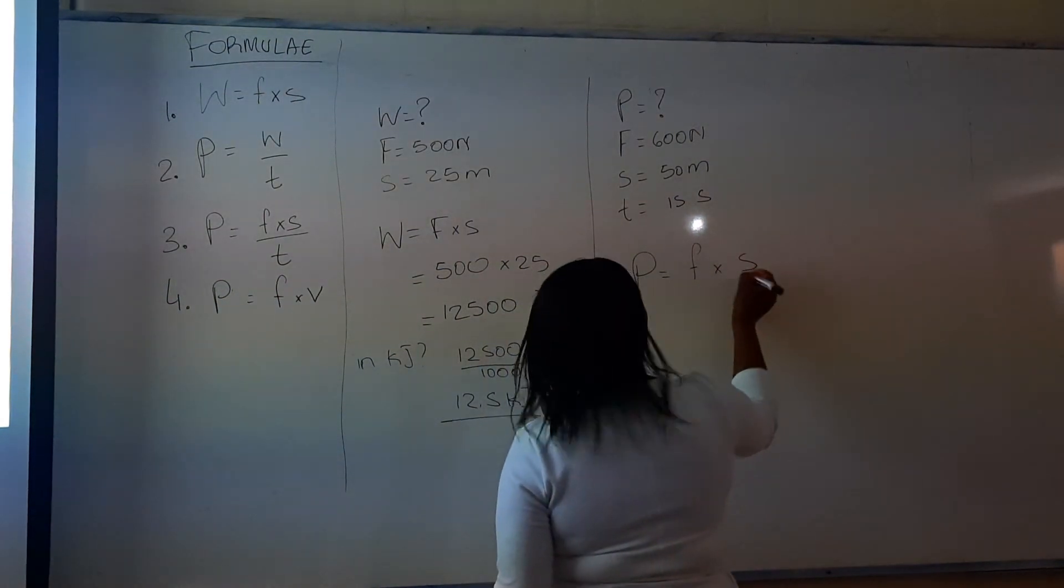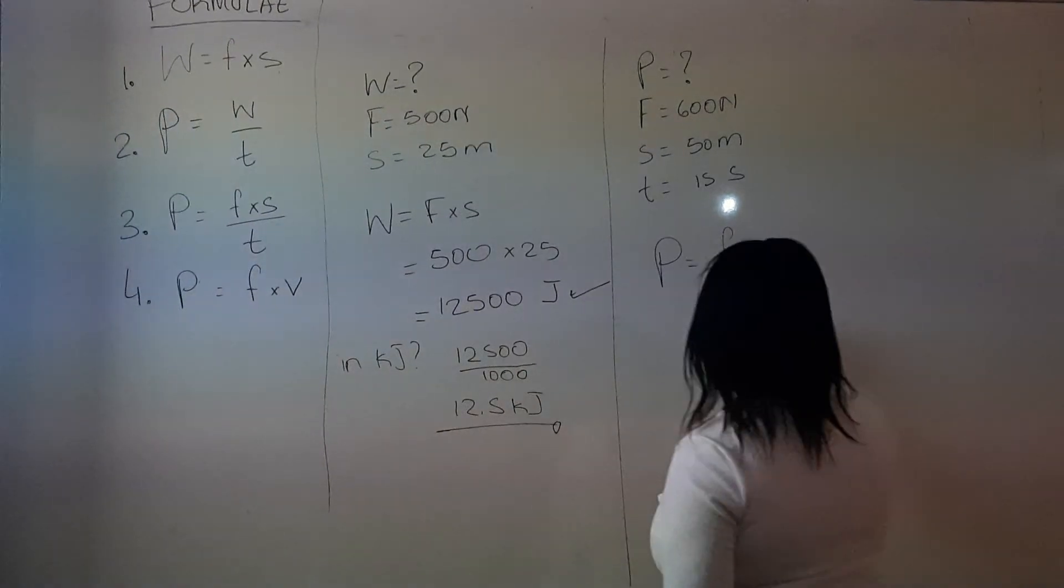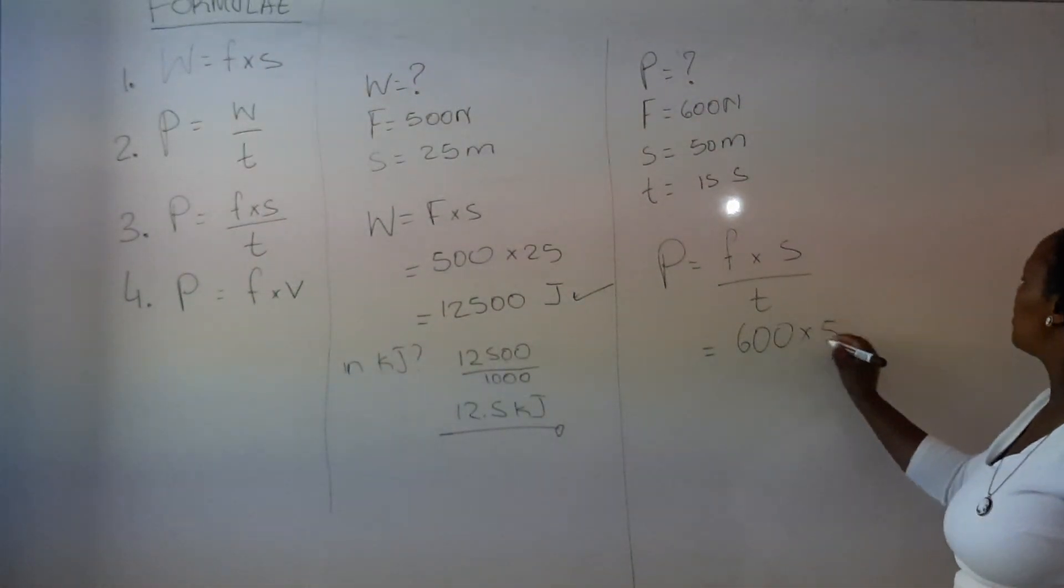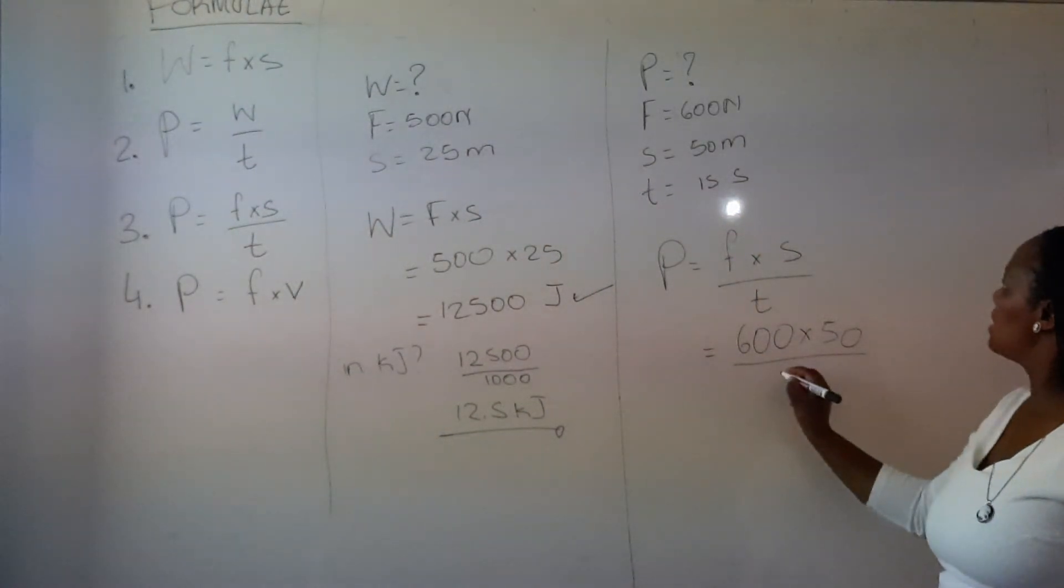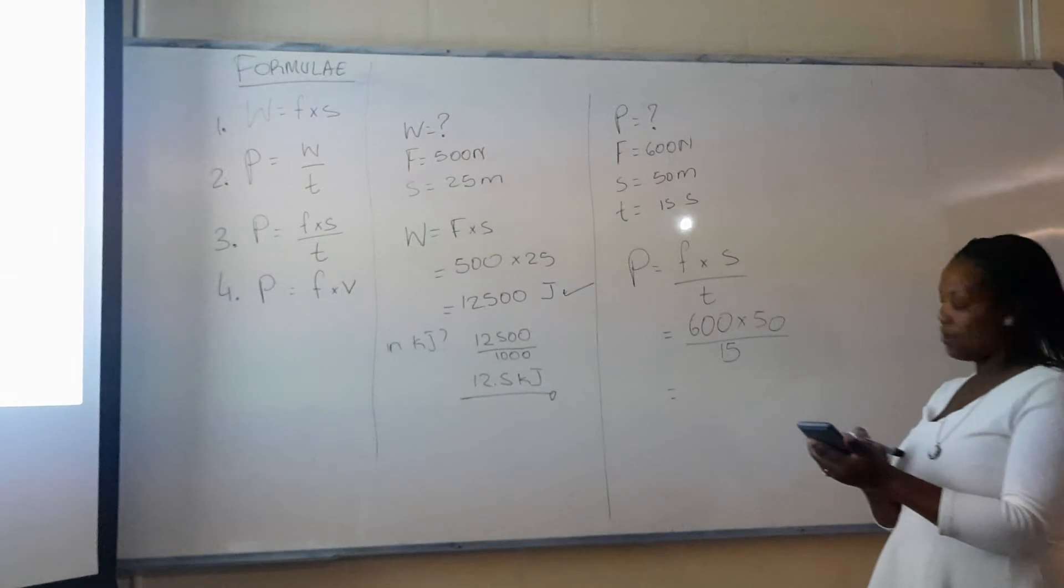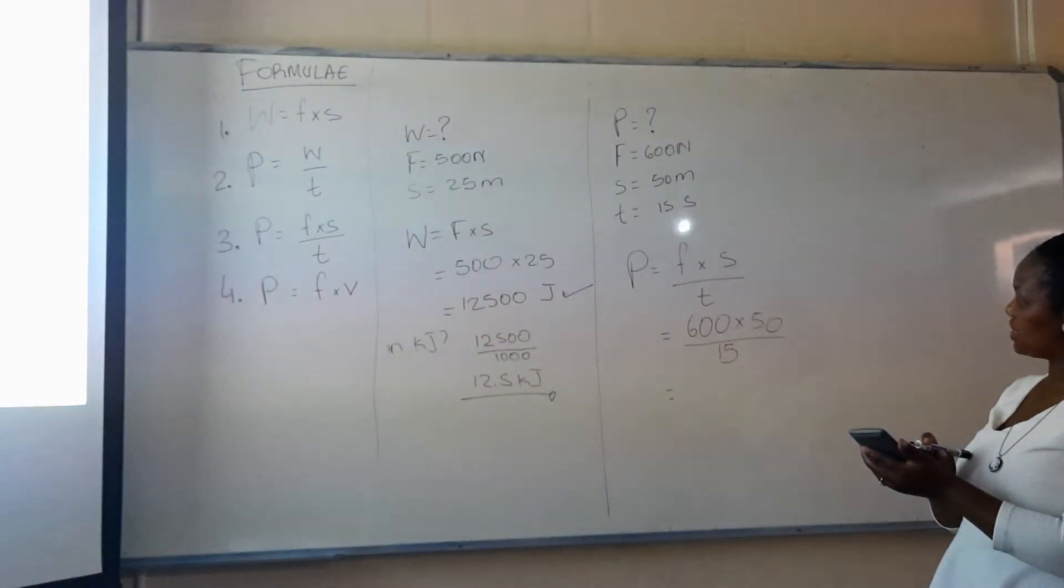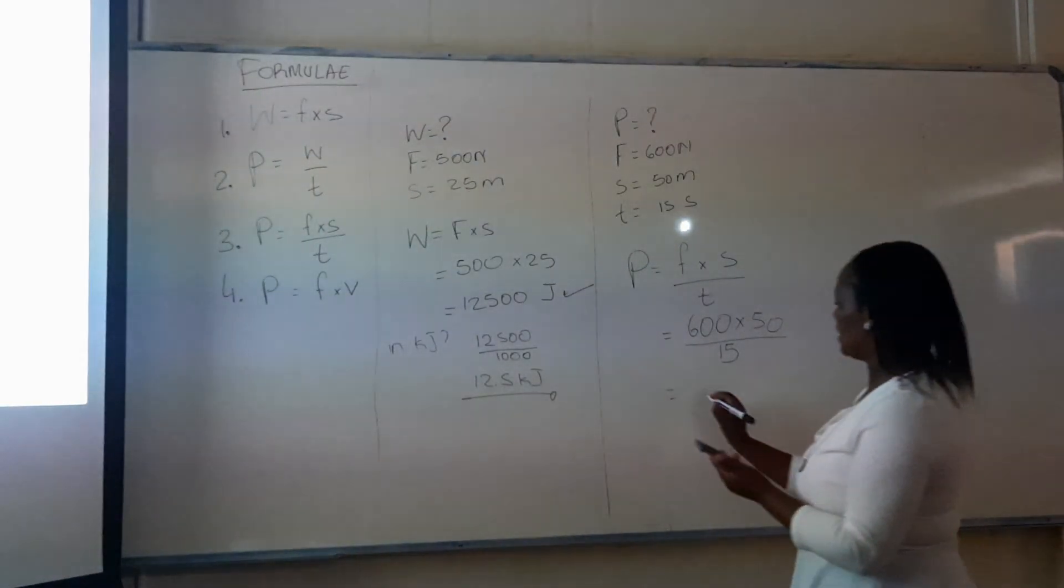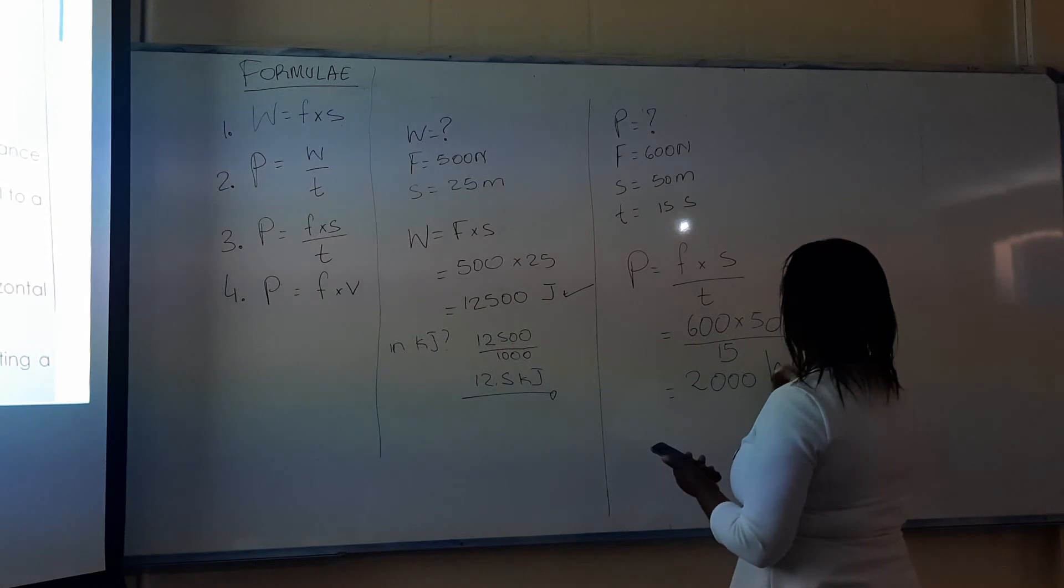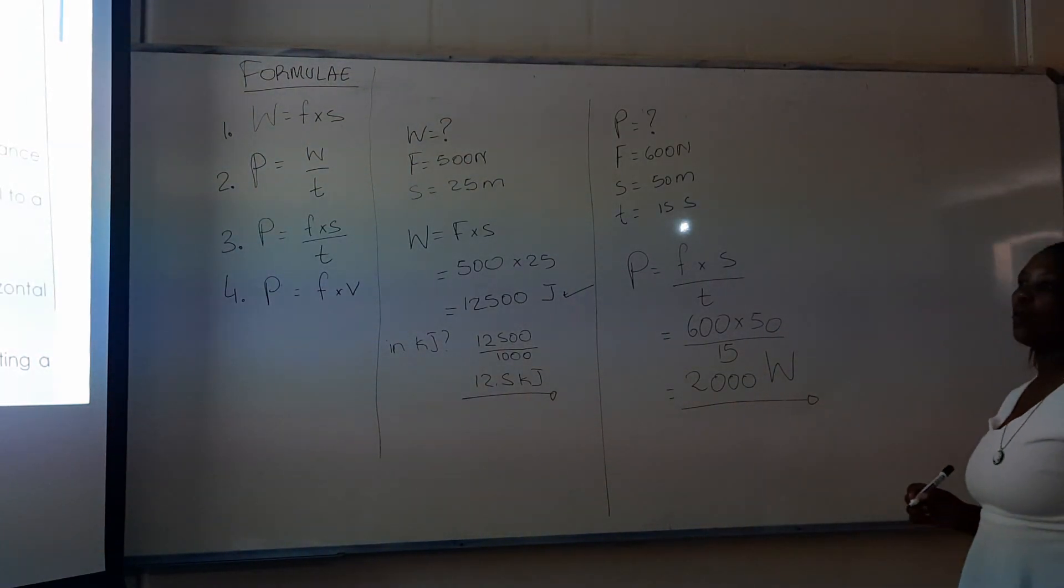Force times distance divided by time. The force is 600. The distance is 50. The time is 15. Then, we work it out. 600 multiplied by 50, divide all that by 15. It gives us 2,000 and it must be in watts. 2,000 watts.